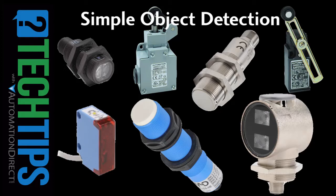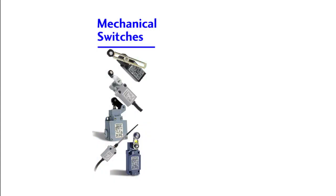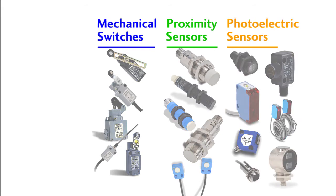Simple object detection in automation is typically done using mechanical switches, proximity sensors, and photoelectric sensors.